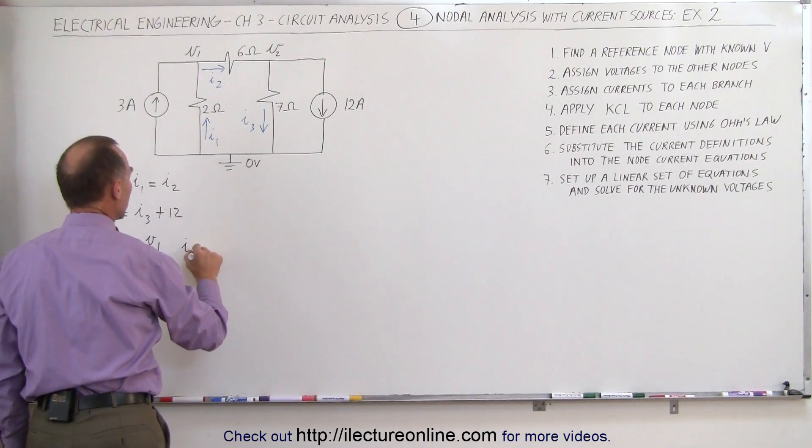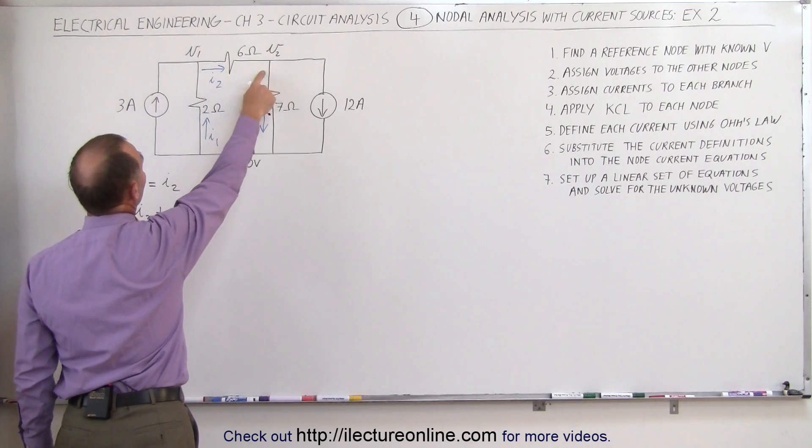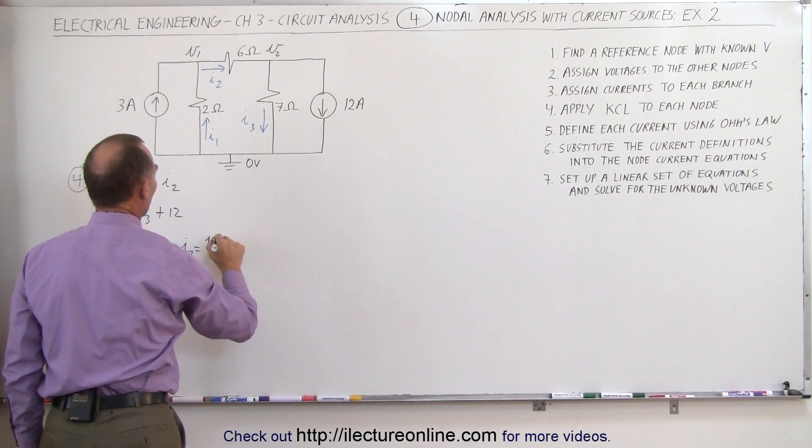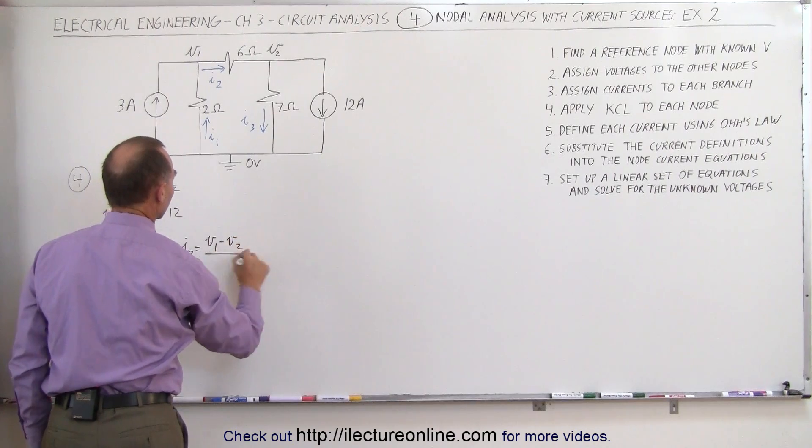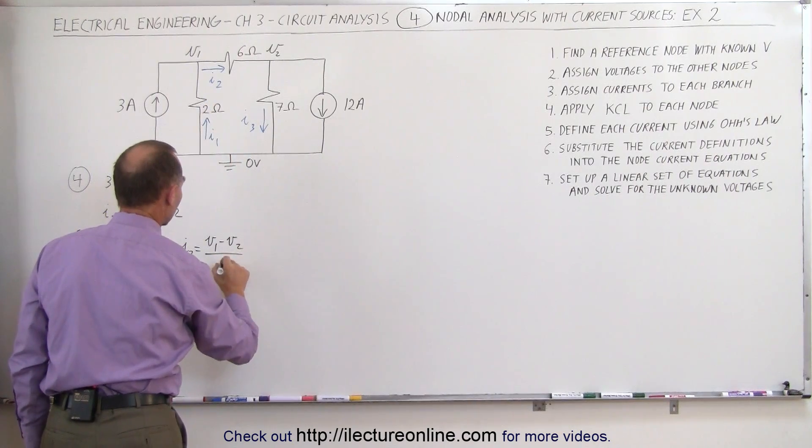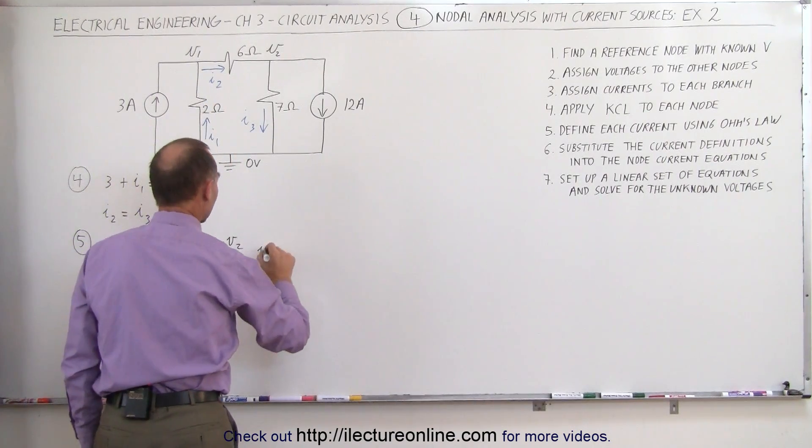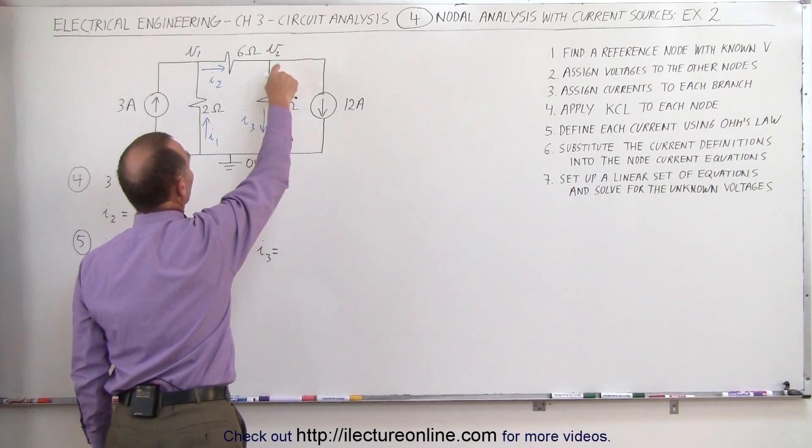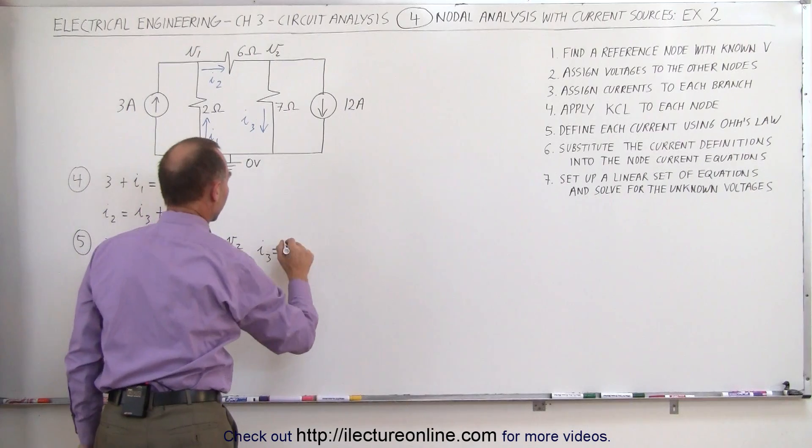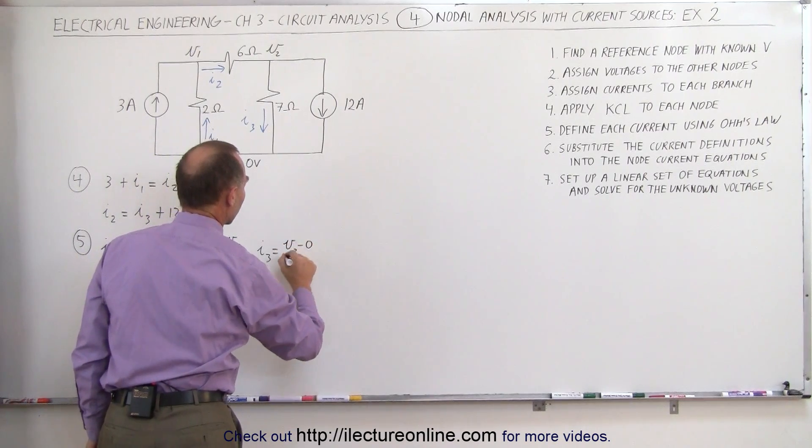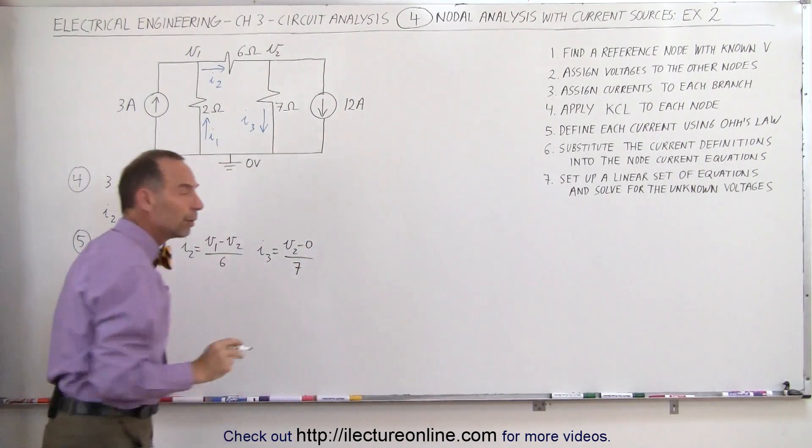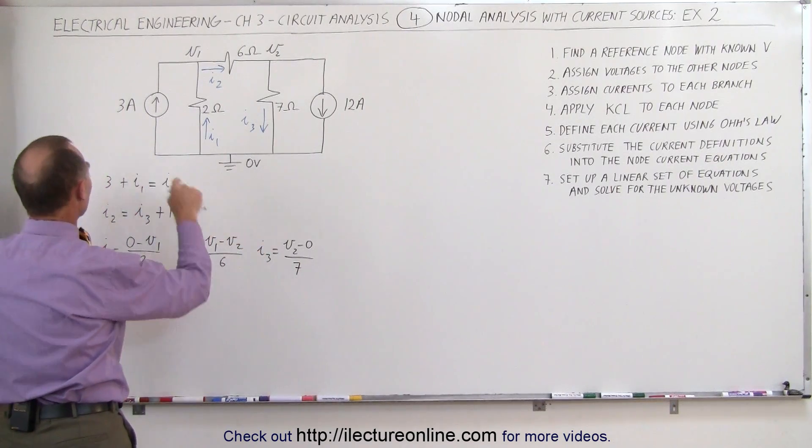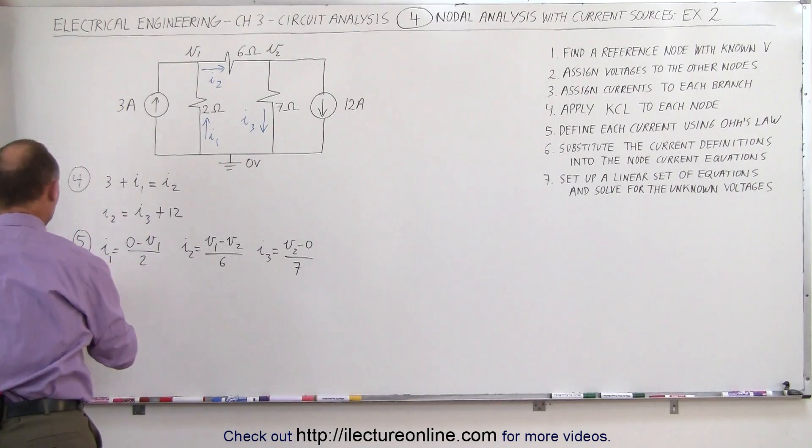This is I1. For I2, we get the voltage drop. Assuming that V2 is lower than V1, we write V1 minus V2 divided by the resistance of that branch, which is 6. And to find I3, we take the voltage drop, that's V2 minus zero divided by the resistance of that branch, which is 7. We now have the three currents defined.